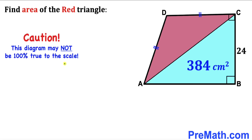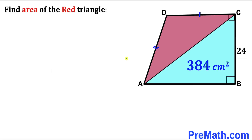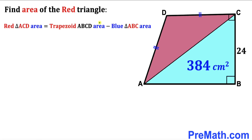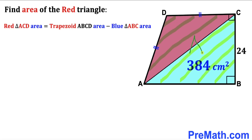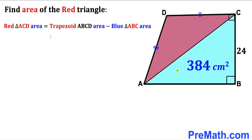Please keep in mind that this figure may not be 100% true to scale. Our action plan: the area of the red shaded triangle ACD equals the area of the whole trapezoid ABCD minus the area of the blue triangle ABC. Since we know the area of the blue triangle is 384 cm², our only task is to calculate the area of trapezoid ABCD.